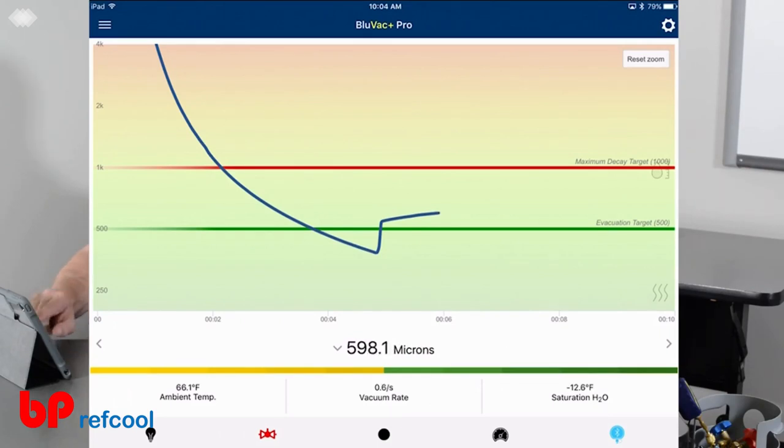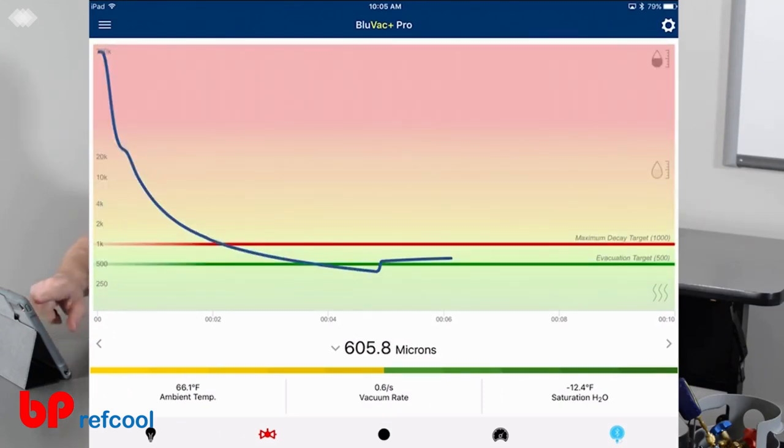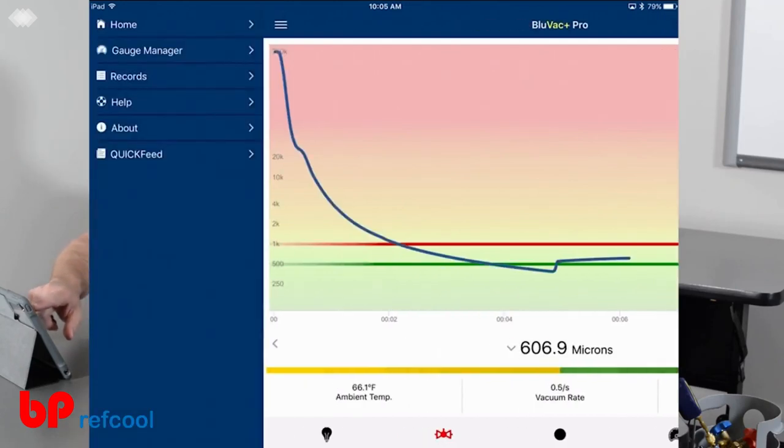You can see this curve here, where we isolated it, and where it's slowly approaching the 1000 microns. It's going to hold that below our decay time. In one minute, there's no way it's going to hit this 1000 micron target. Go ahead here, we'll go back, and let's take a look at our report.